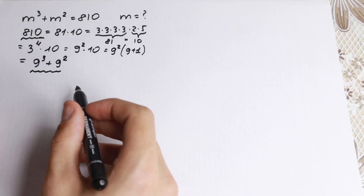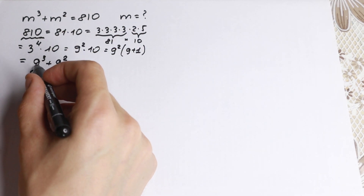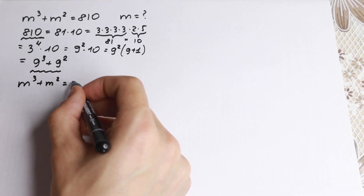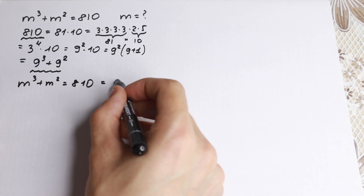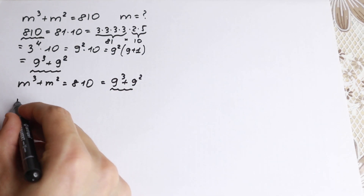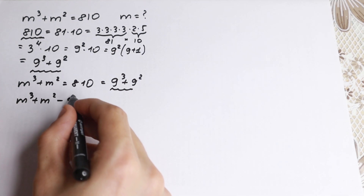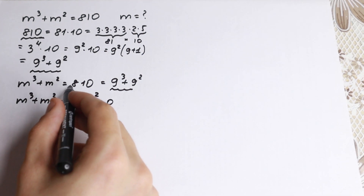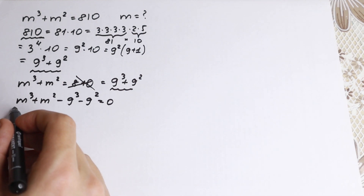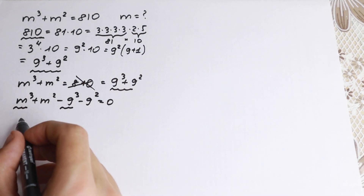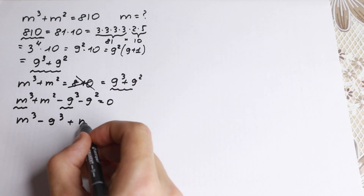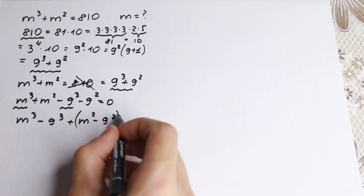So 9³ + 9² = 810. Now let's substitute: replace 810 with 9³ + 9² and bring those terms to the left side. We get m³ + m² − 9³ − 9² = 0. Now if we look closely, we have m³ and 9³ — two cubes — and we can group them: (m³ − 9³) + (m² − 9²) = 0.